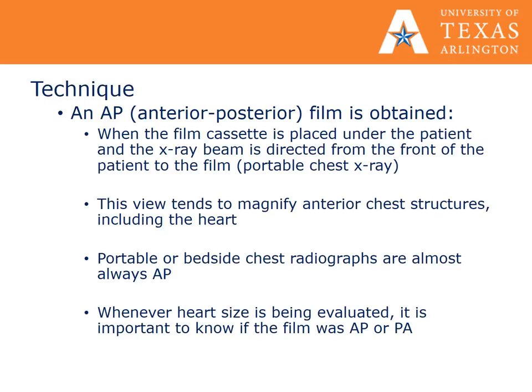An AP, or anterior-posterior, film is obtained when the cassette is placed under the patient and the X-ray beam is directed from the front of the patient to the film, such as a portable chest X-ray. This view tends to magnify anterior chest structures, including the heart.